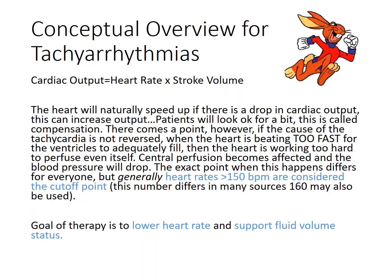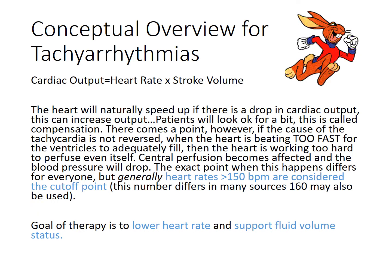For a conceptual overview of tachyarrhythmias: cardiac output equals heart rate times stroke volume. Our heart will compensate, so if our stroke volume drops — maybe the patient is dry, received too many diuretics, had a Lasix overdose, or is bleeding — our heart will compensate by increasing heart rate to feed itself first.